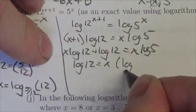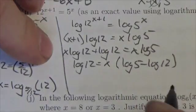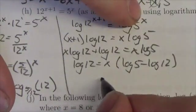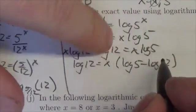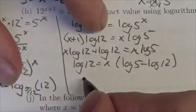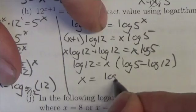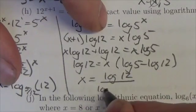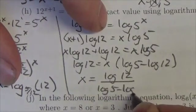And now x, I would do, I'm gonna divide by this piece right here so x is gonna equal the log of 12 divided by the log of 5 minus the log of 12.